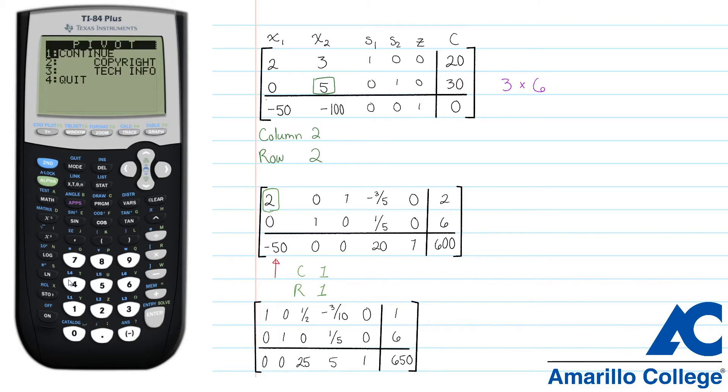Hit enter on your calculator and then hit 4 to leave the pivot program. We don't need the calculator anymore, so I'm just going to turn it off.